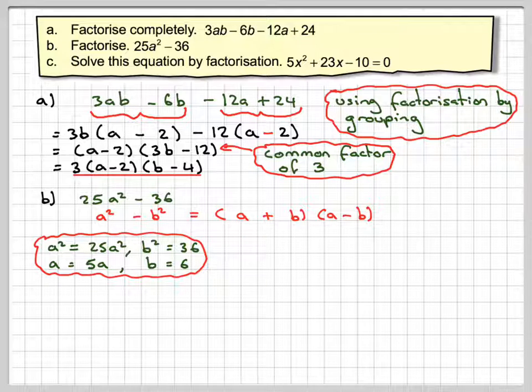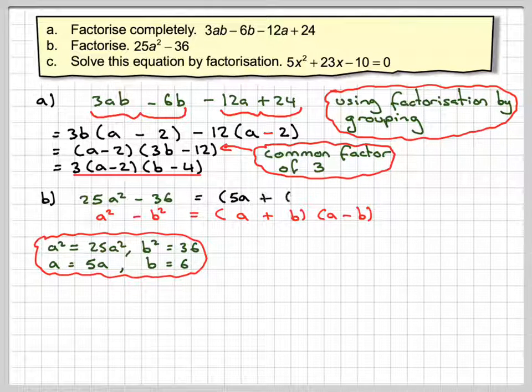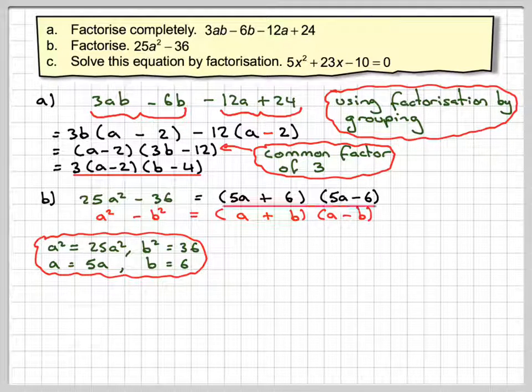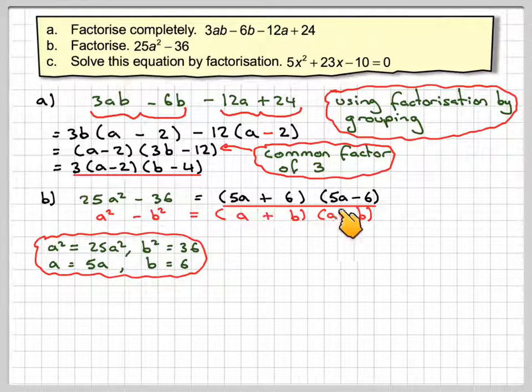So we now substitute in here, we get 5a for a, plus b which is 6, and then 5a again, and minus 6. Therefore, we're now done.